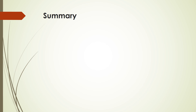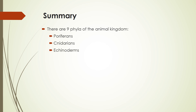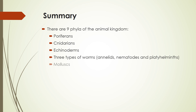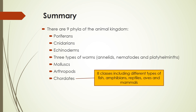To summarize today's lesson: there are nine phyla of the animal kingdom — Porifera, Cnidarians, echinoderms, three types of worms (annelids, nematodes, and platyhelminthes), molluscs, arthropods, and chordates. There are eight classes of the chordate phylum, including different types of fish, amphibians, reptiles, aves, and mammals. There are three subclasses of mammals: placentals, monotremes, and marsupials. And a main way that plants can be classified is based on how they reproduce.